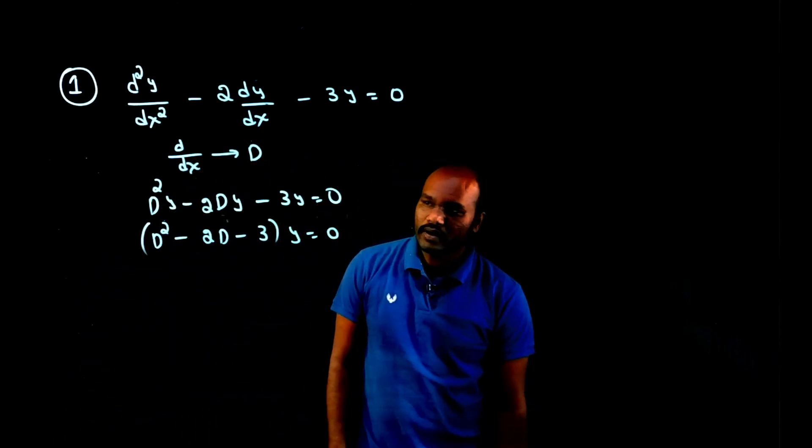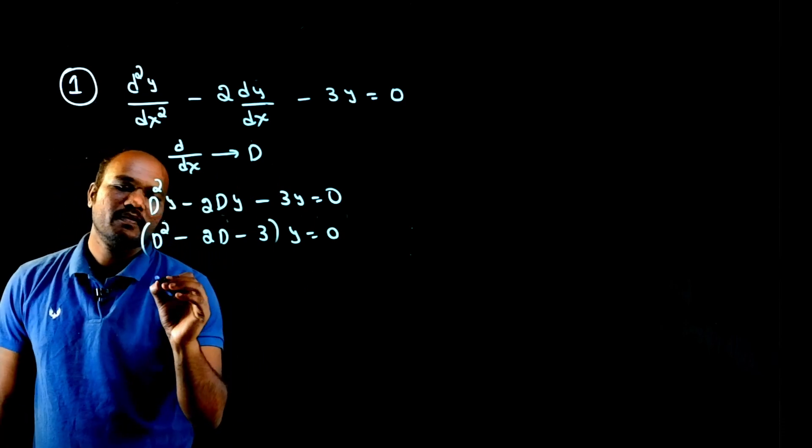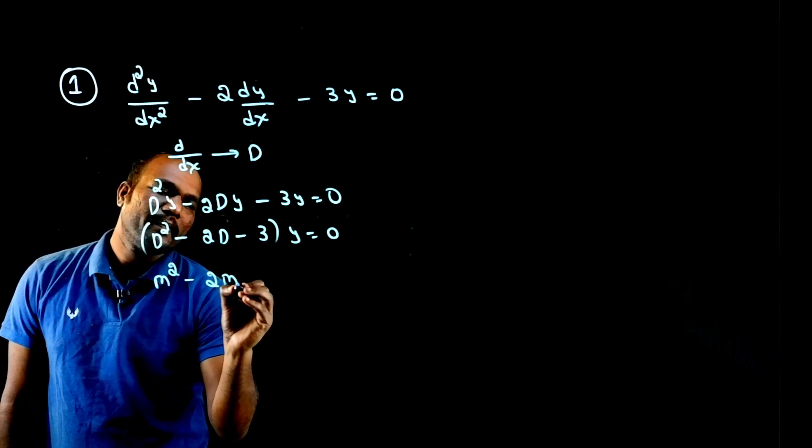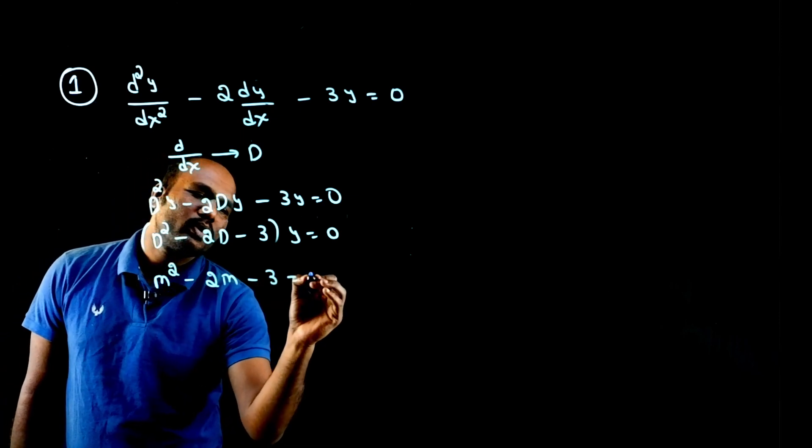From here, what you need to do? We need to convert d in terms of m. So this will become m square minus 2m minus 3 equal to 0.